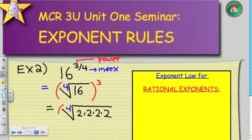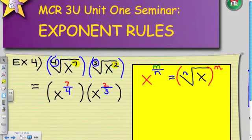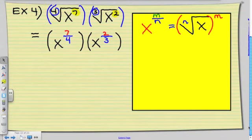So we can really see this if we rewrite the radicals into rational form. So what I have here is x and x. However, my numerators are going to be 7 and 2, and my denominators are going to be the indexes, 4 and 3. So we're still multiplying powers. So what I'm going to do is keep the base the same.